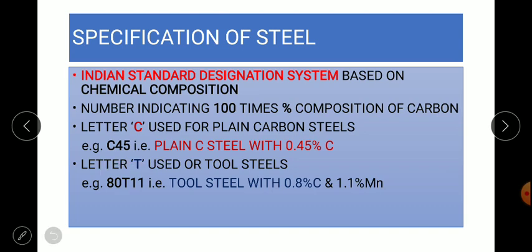If we use T letter, suppose we have an example T 80-11. What will it indicate? Tool steel of 80 divided by 100 indicates 0.8 percent carbon, and 11 divided by 10 - whatever numeral values after T we divide by 10 - means 0.8 percent carbon and 1.1 percent manganese.